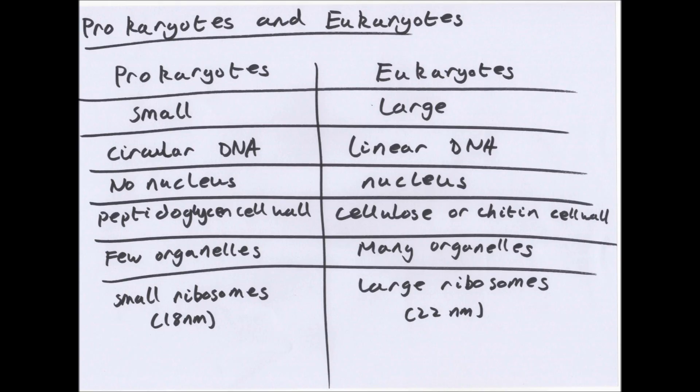Prokaryotes contain circular DNA. That's in plasmids, not in chromosomes. Eukaryotes have chromosomes. As we said, prokaryotes have no nucleus, eukaryotes do. Prokaryotes have a peptidoglycan cell wall, and eukaryotes have cellulose in plants and chitin in fungi.